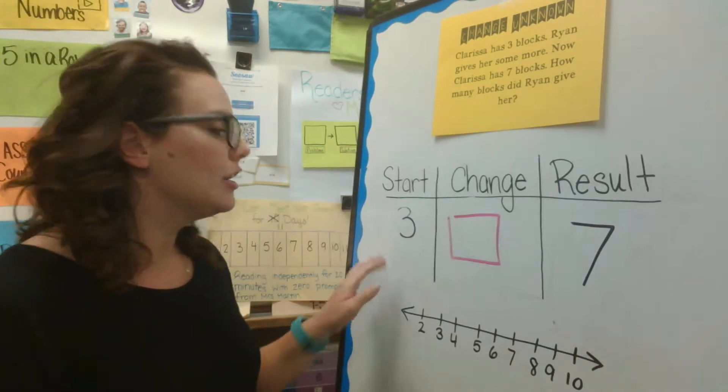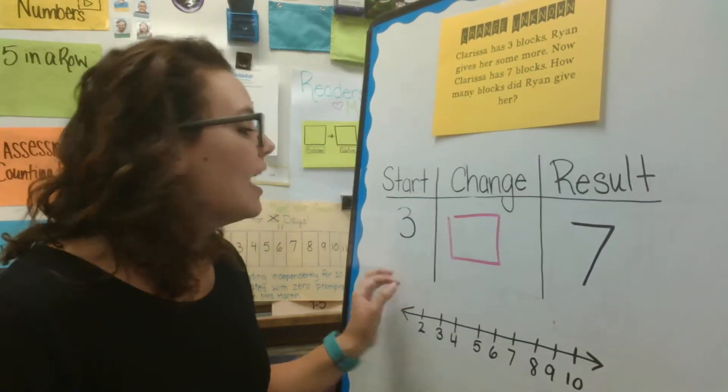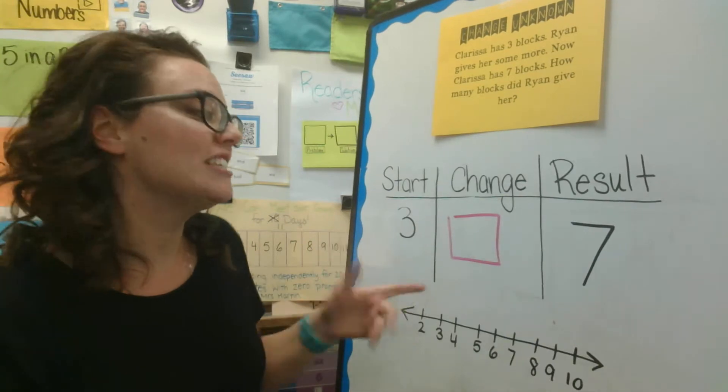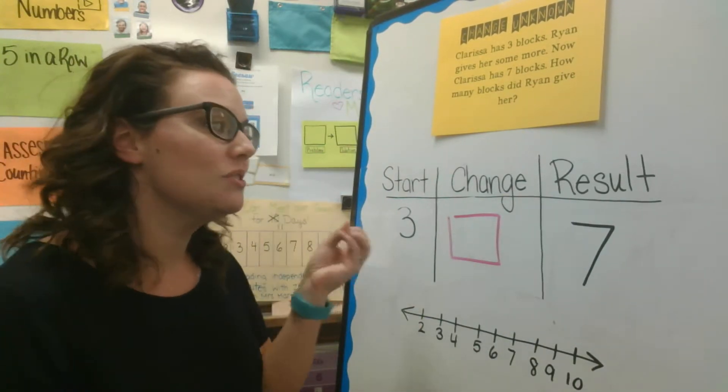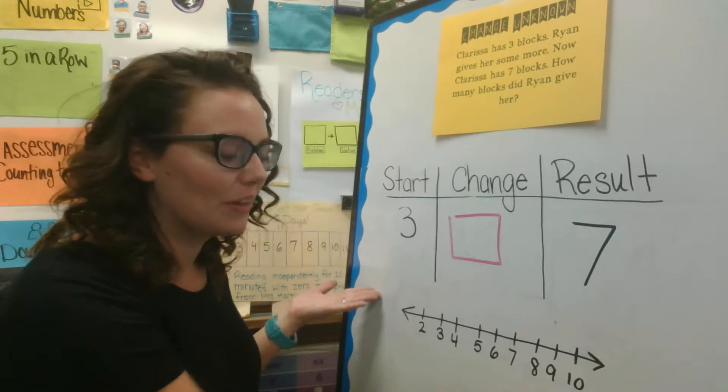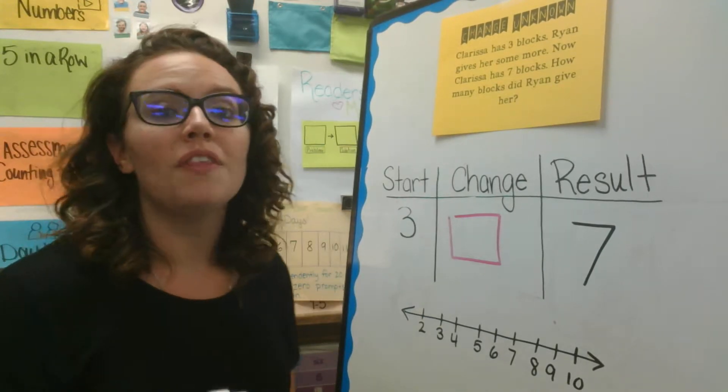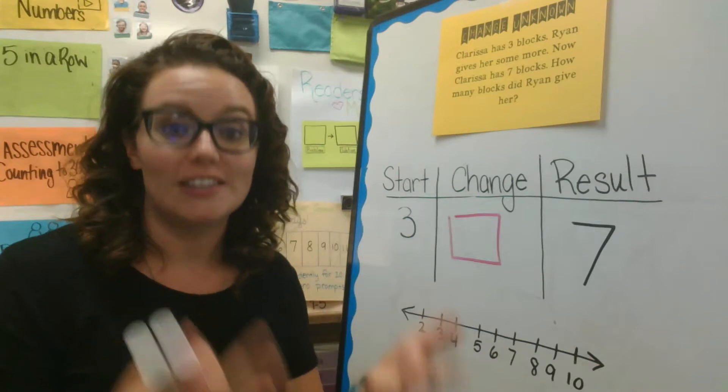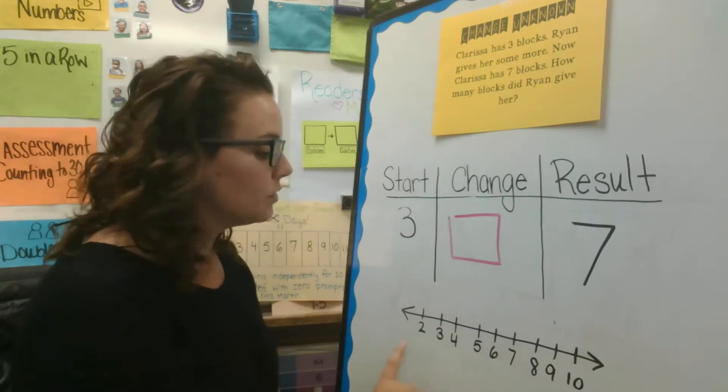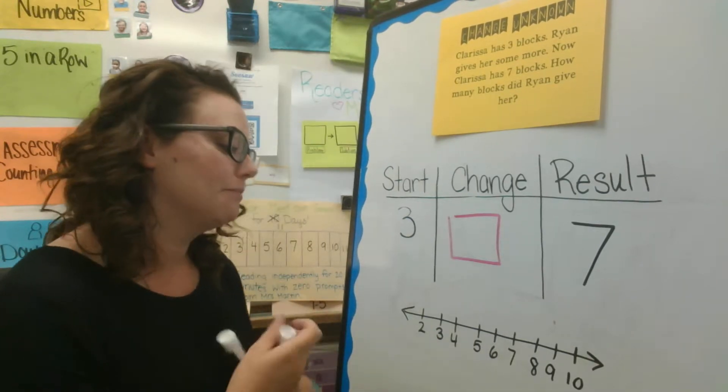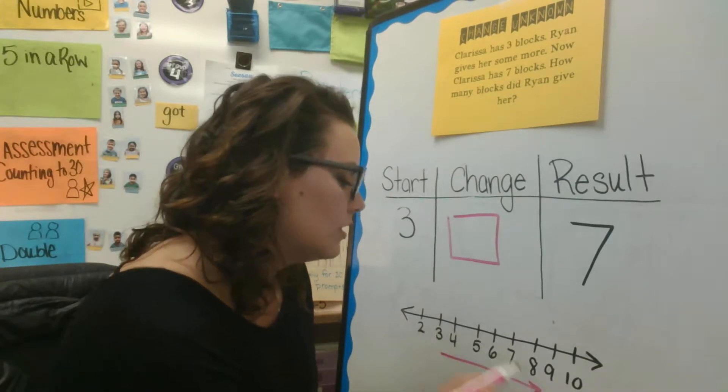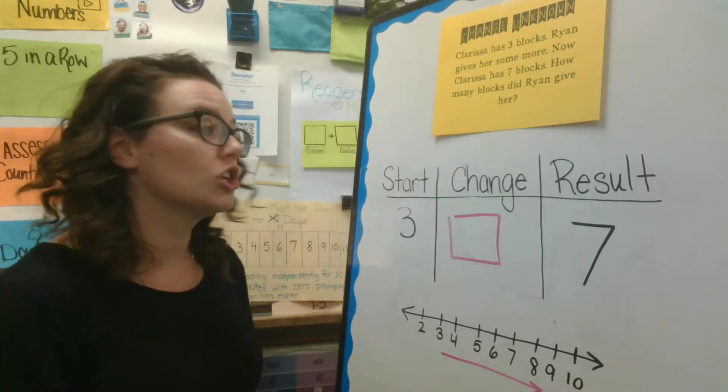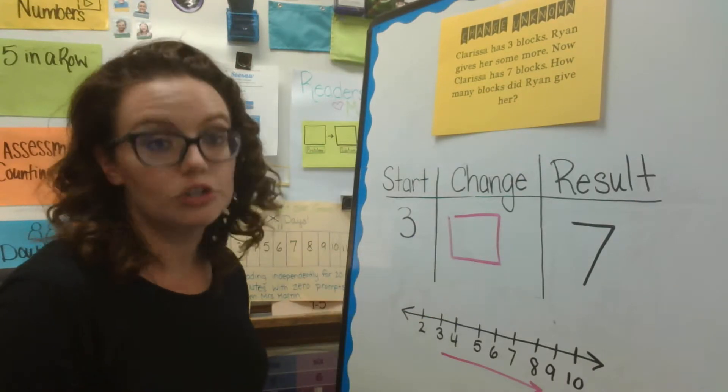So, I know how many she started with. I know how many she has at the end. I just need to figure out how many Ryan gave her. And we can do that again with our number line. Now, we know that with addition problems, we are always moving to the right on the number line. So, I'm going to draw this arrow to remind me to go to the right because we are doing addition.